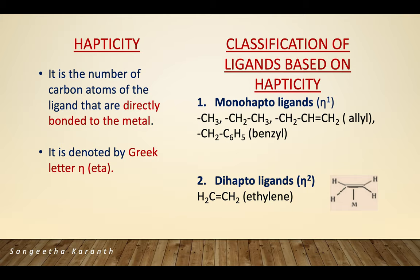Hapticity is the number of carbon atoms of the ligand that are directly bonded to the metal. It is represented by the Greek letter eta (η). Classification of ligands is based on how many carbon atoms of the ligand are bonded to the metal.